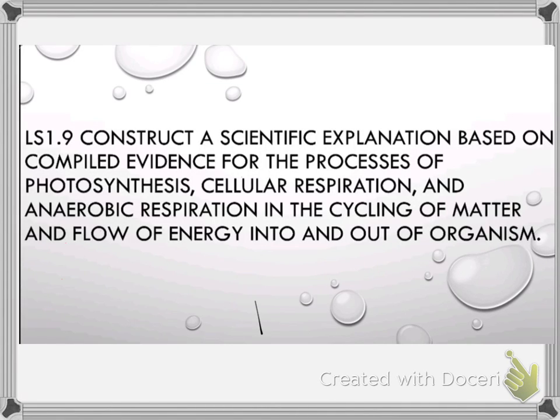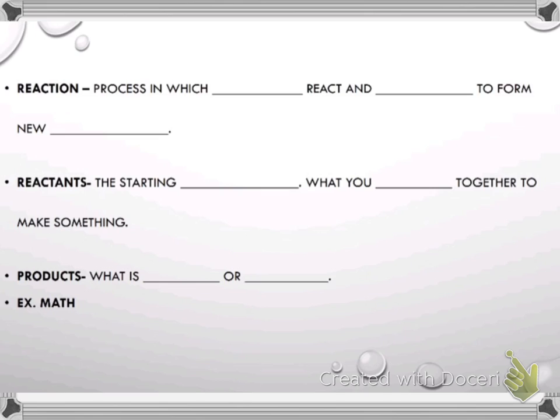Okay guys, here is your next fun sheet. It is construct a scientific explanation based on compiled evidence for the processes of photosynthesis, cellular respiration, and anaerobic respiration in the cycling of matter and flow of energy into and out of an organism. So we're going to talk about photosynthesis and cellular respiration, and a little bit about anaerobic respiration, but how these processes go in and out of our ecosystems and environments and how we're affected by them as organisms. First we have to define our terms like always.